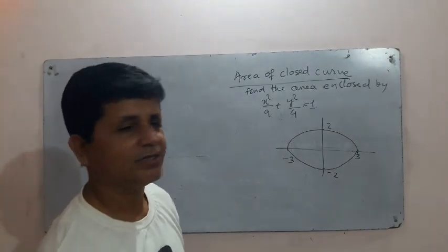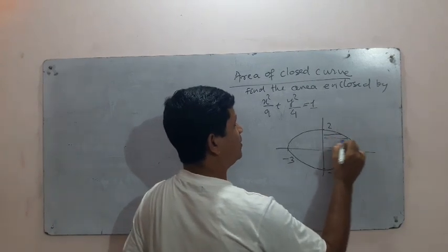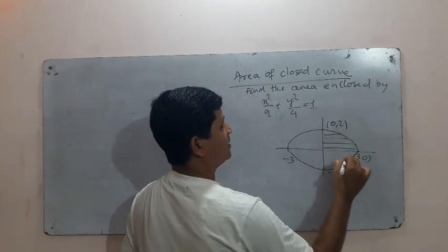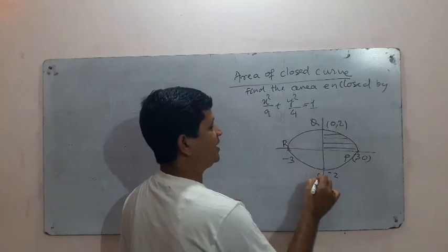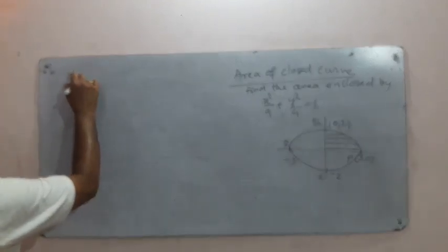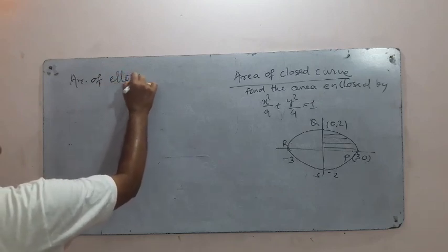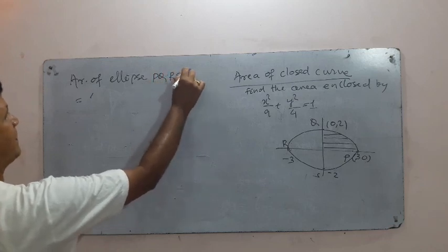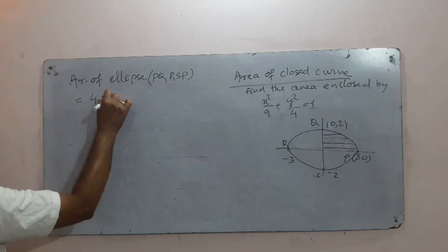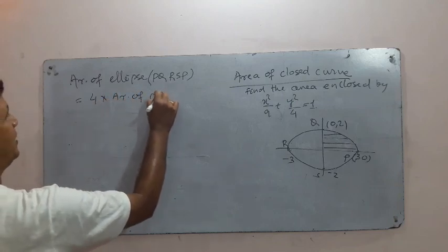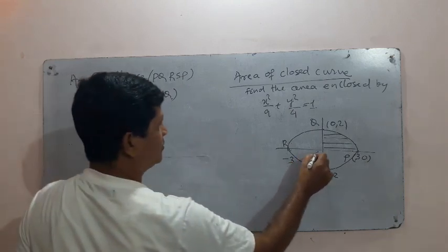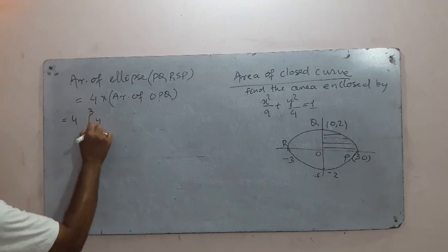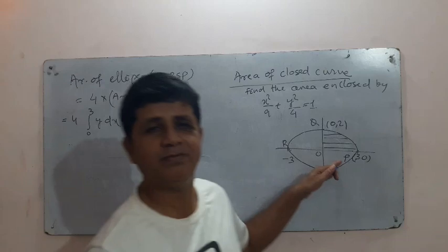We determine the area of one part and multiply by 4 to get the total area. The coordinates go from 0 to 3. Labeling points P, Q, R, S: area of ellipse PQRSP = 4 × area of OPQ = 4 × ∫₀³ y dx. Because the x-axis is involved, we write y dx.